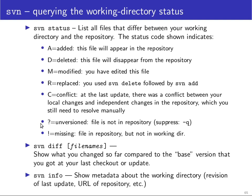svn status will also show with a question mark any unversioned files that it doesn't know anything about — these may be compiler output files. You can use option -q to suppress the display of these. If Subversion thinks there should be a file but can't find it, there will be an exclamation mark indicating a missing file, and these will be reinstated at the next svn update. Similar to rcs diff, with svn diff you can check differences between file versions. If you don't specify any version, your current working copy will be compared against the copy you received at the last svn checkout, so svn diff gives you a preview of the changes that will be sent to the repository at the next commit.